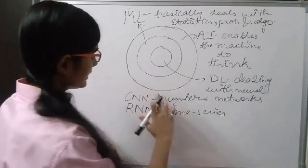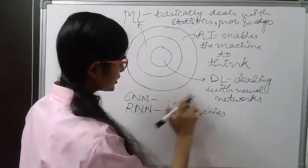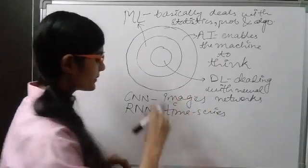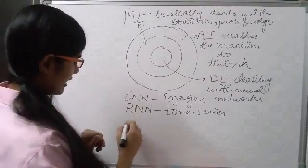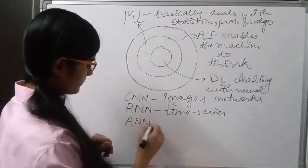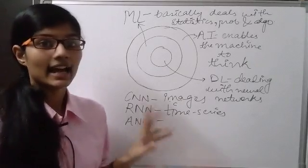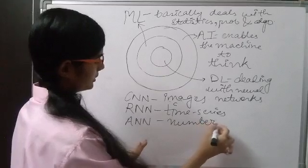And I am so sorry here. CNN does not deal with numbers. It deals with images. I am so sorry for that. CNN, RNN and the third, we have ANN. ANN is artificial neural network. And this deals with the numbers.